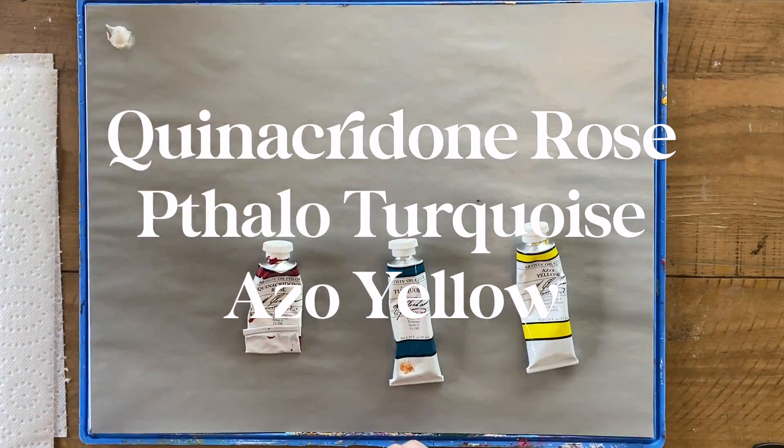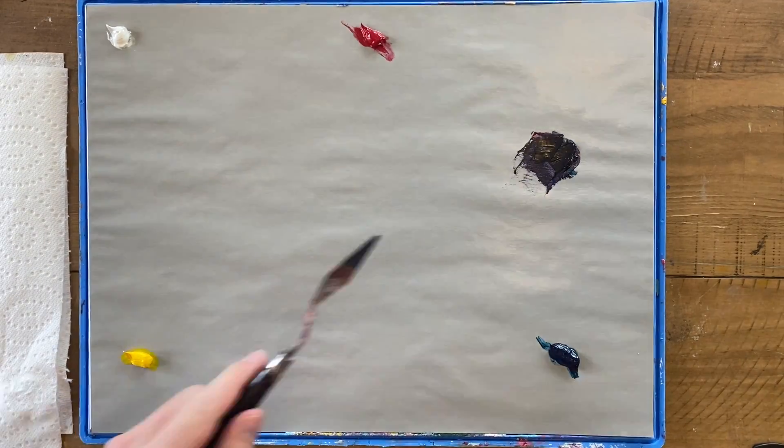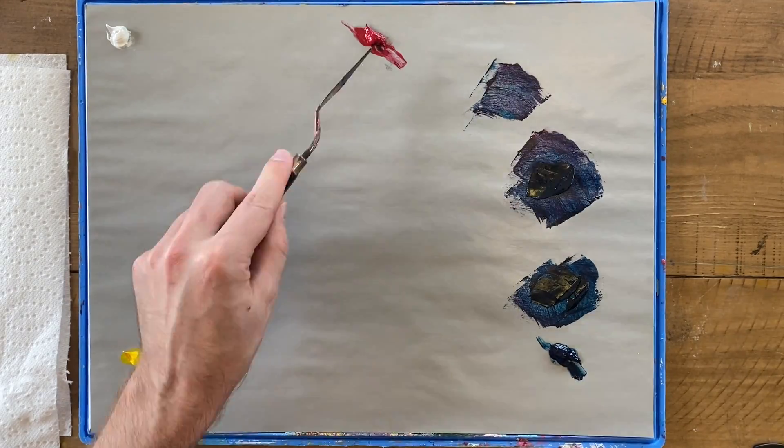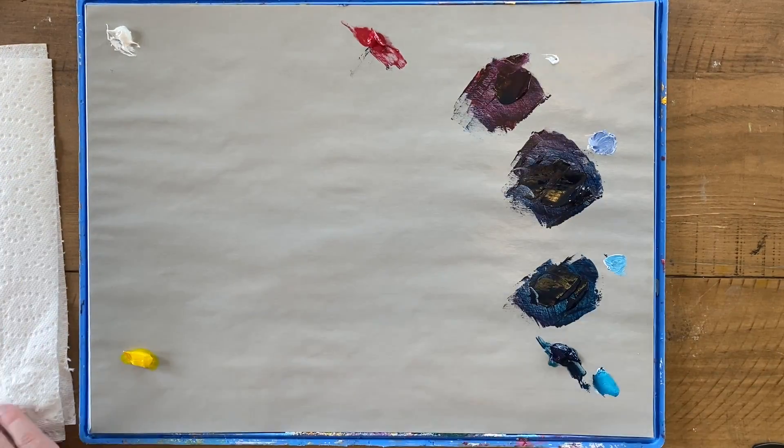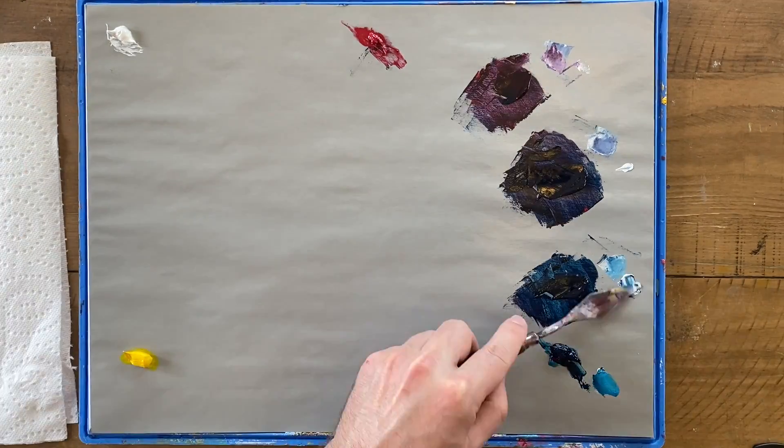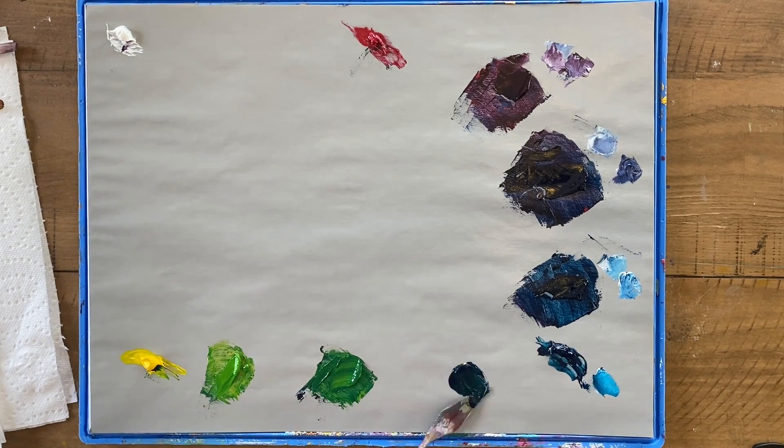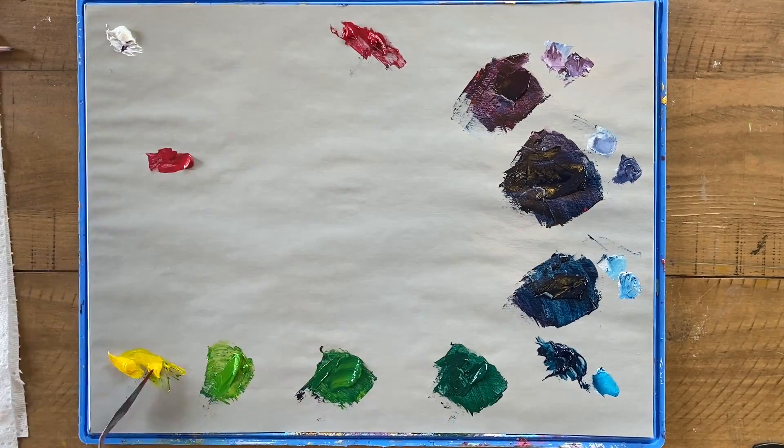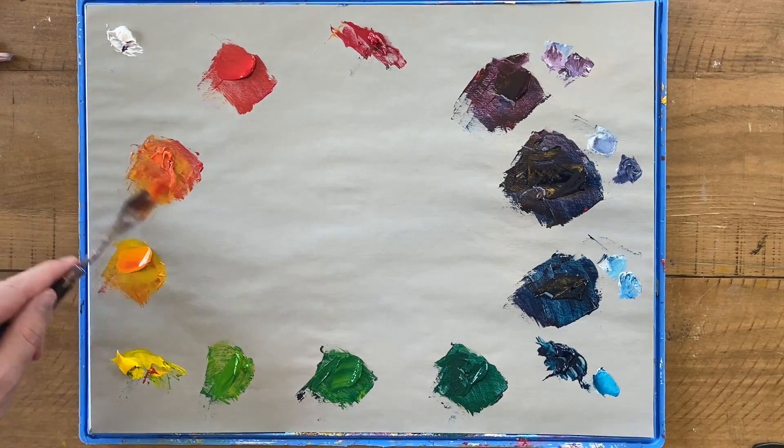Now we're going to do a really fun one. The hardcore color geeks out there will be aware of what I call the printer's primaries: cyan, magenta, and yellow. These are the primary colors in your color printer. You may have seen CMYK on your printer ink before, and that's what they're talking about: cyan, magenta, yellow, and then K stands for black. For my printer's primaries, I'm going to be using quinacridone rose for my magenta, phthalo turquoise for my cyan, and azo yellow for my yellow.